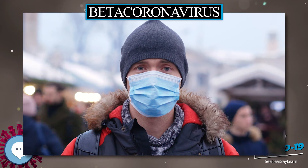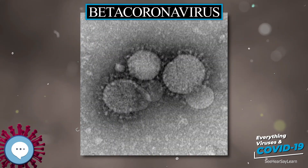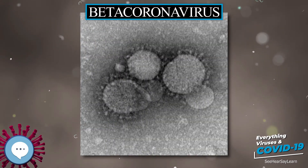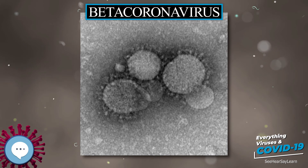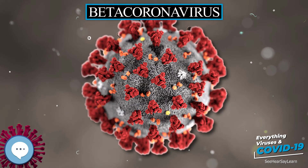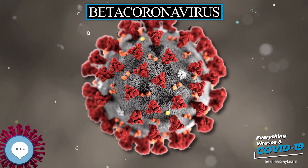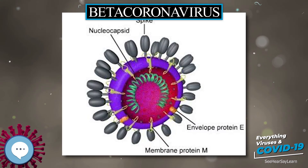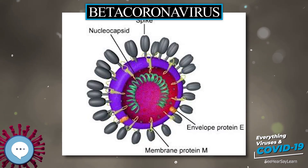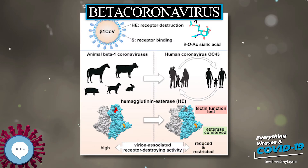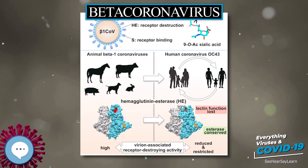Classification. Within the genus beta-coronavirus (group 2-CoV), four lineages — A, B, C, and D — are commonly recognized. The four lineages have also been named using Greek letters or numerically. A further subgenus is Bigovirus, including bat-HP-beta-coronavirus-Zhejiang-University-Nanjing-2013.